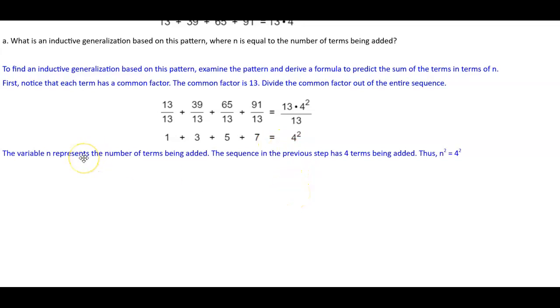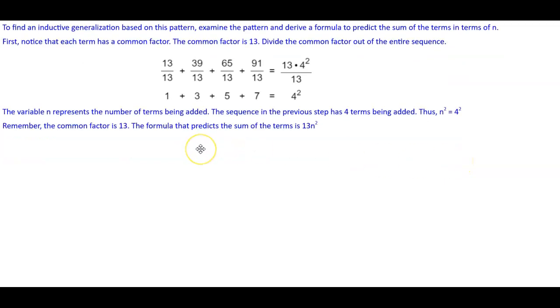The variable n represents the number of terms being added. The sequence in the previous step has 4 terms being added. Thus, n squared is equal to 4 squared. Remember that the common factor is 13. Therefore, the formula that predicts the sum of the terms is 13 times n squared.